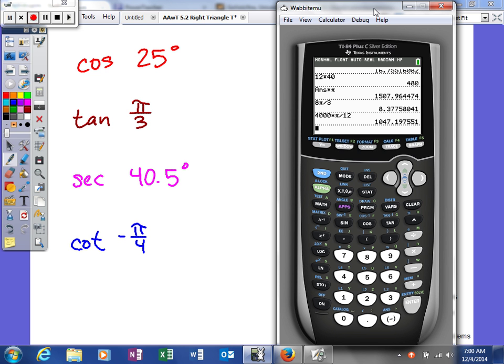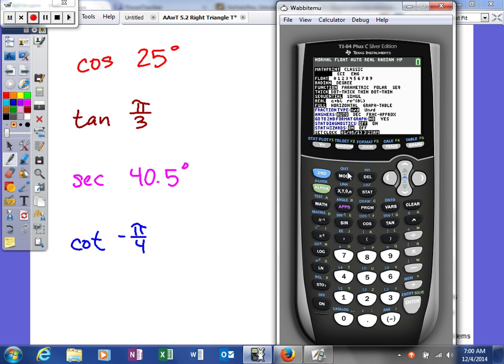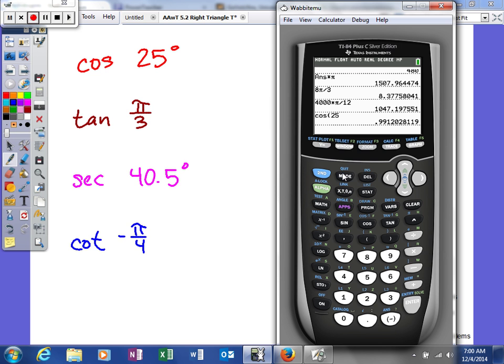For cosine of 25 degrees, if I type this in, I get an answer. Now that answer might be right or might not be right, because our calculator has to be in the correct mode. As you can see right now, the third line down, my calculator is in radians. So when I hit that answer, it's going to give me the answer as if 25 is a radian measure. I need to make sure it's in degrees, and then that's the value I get.